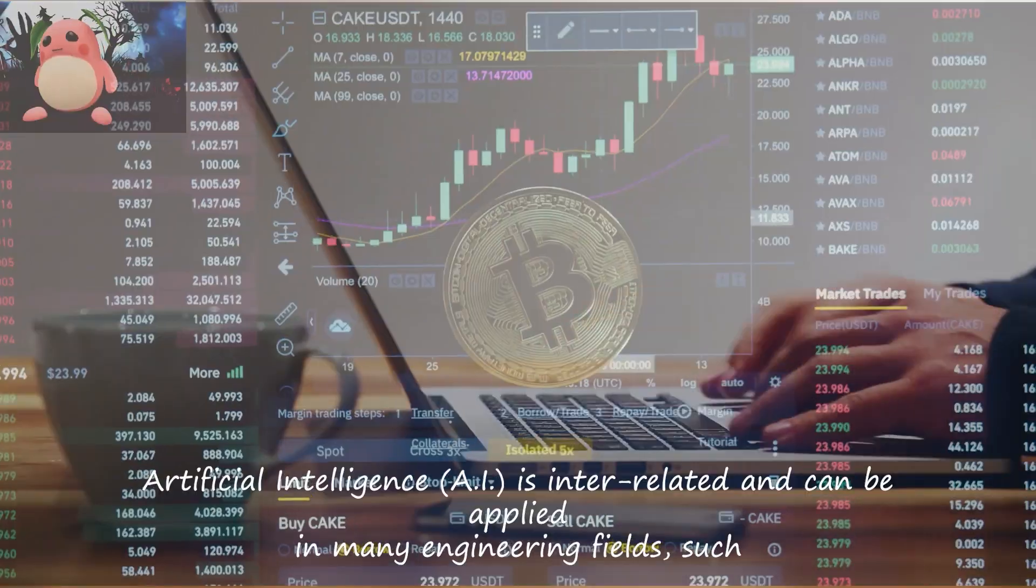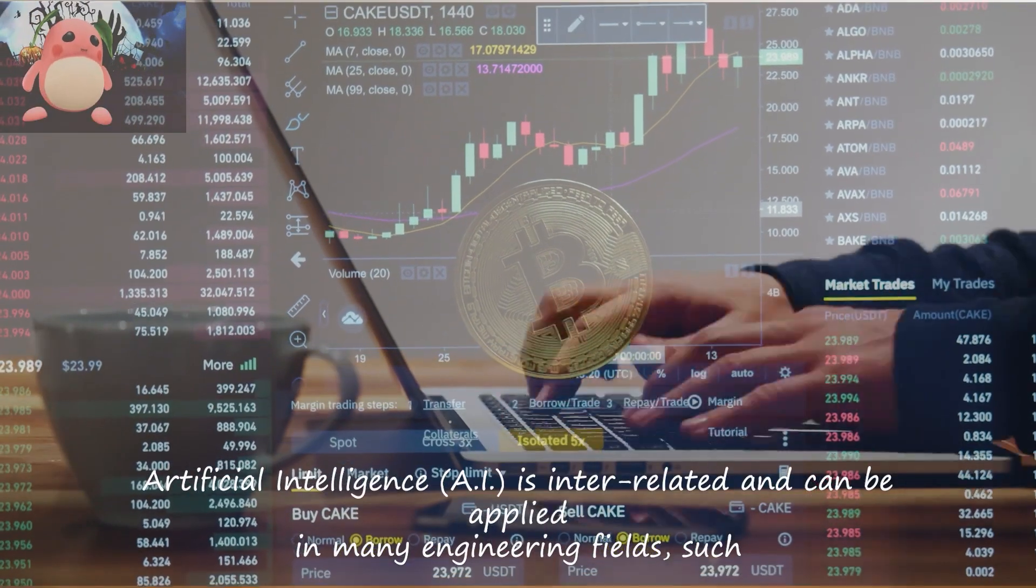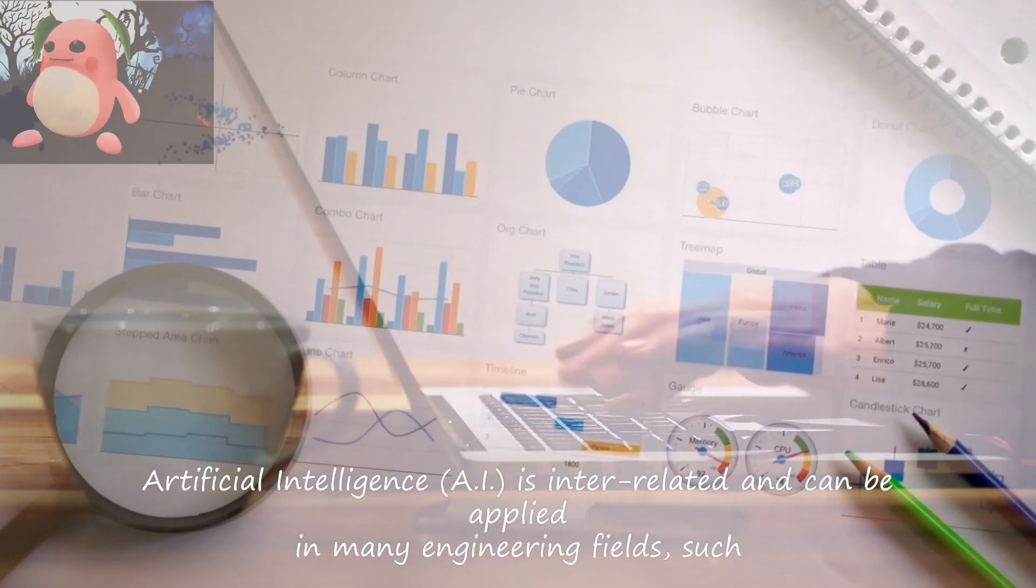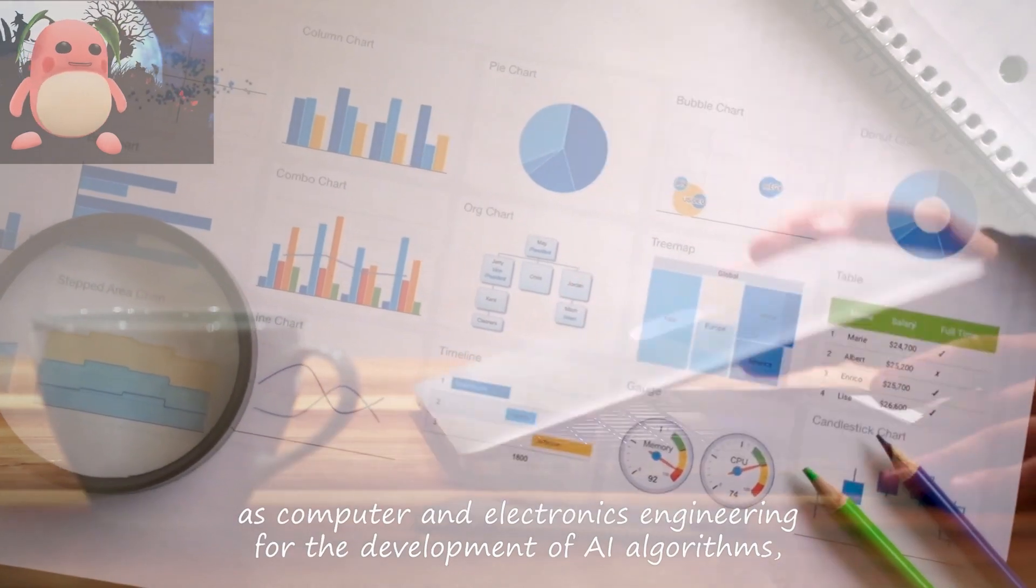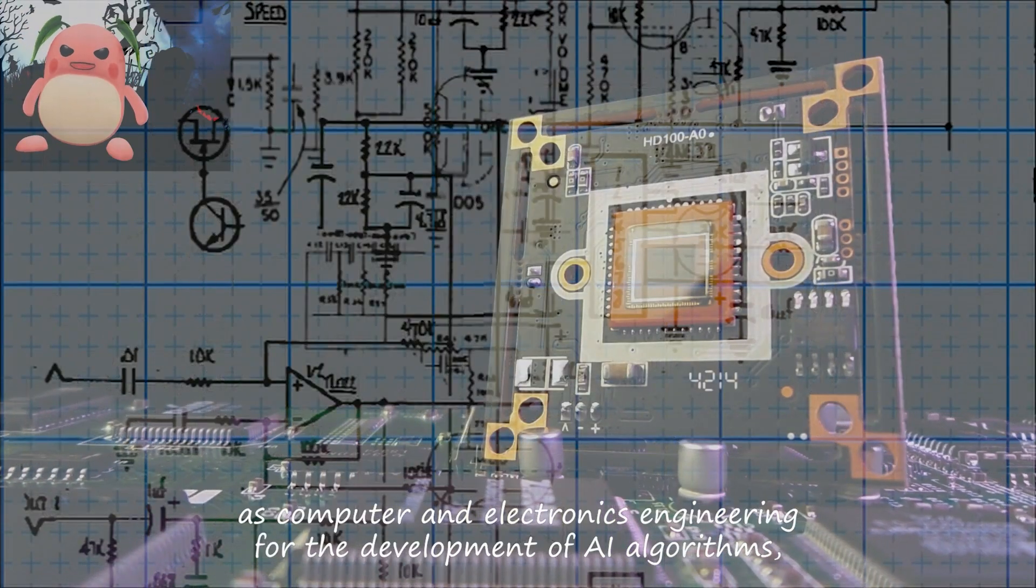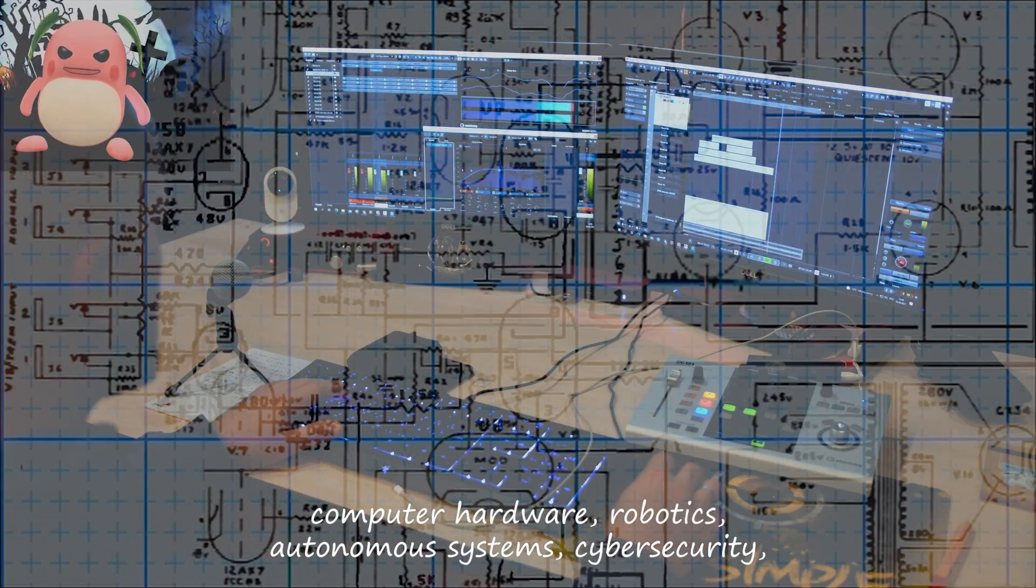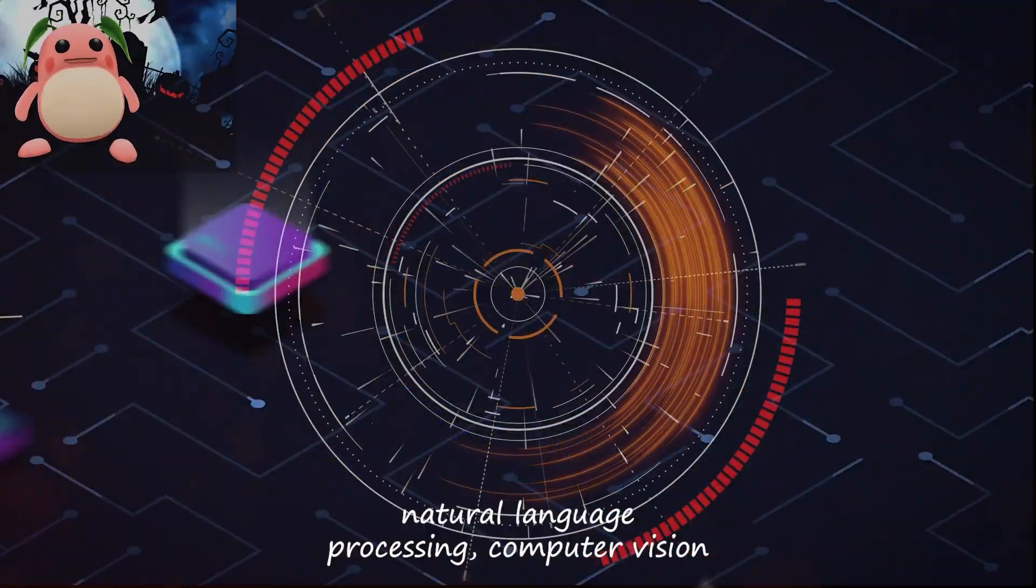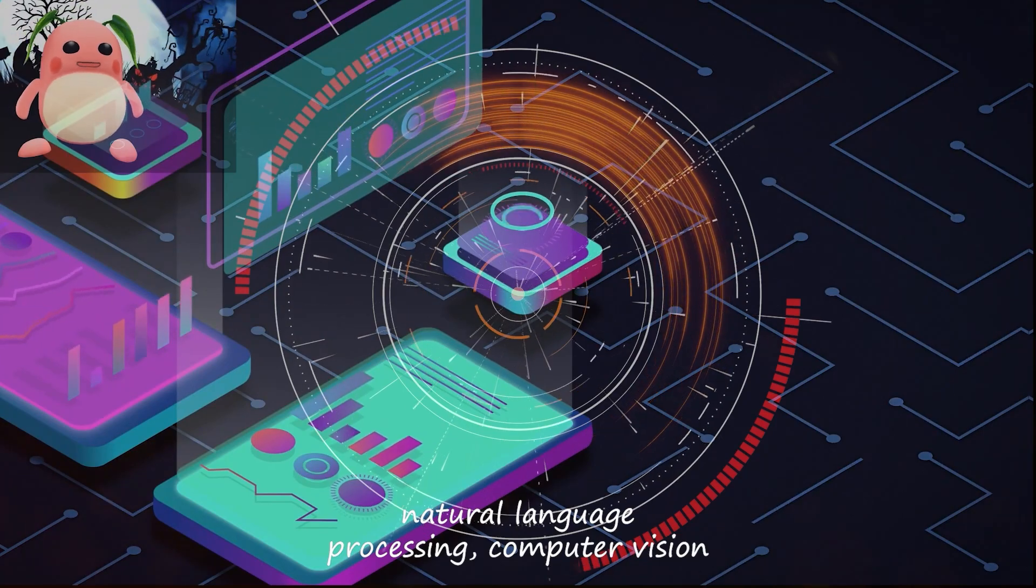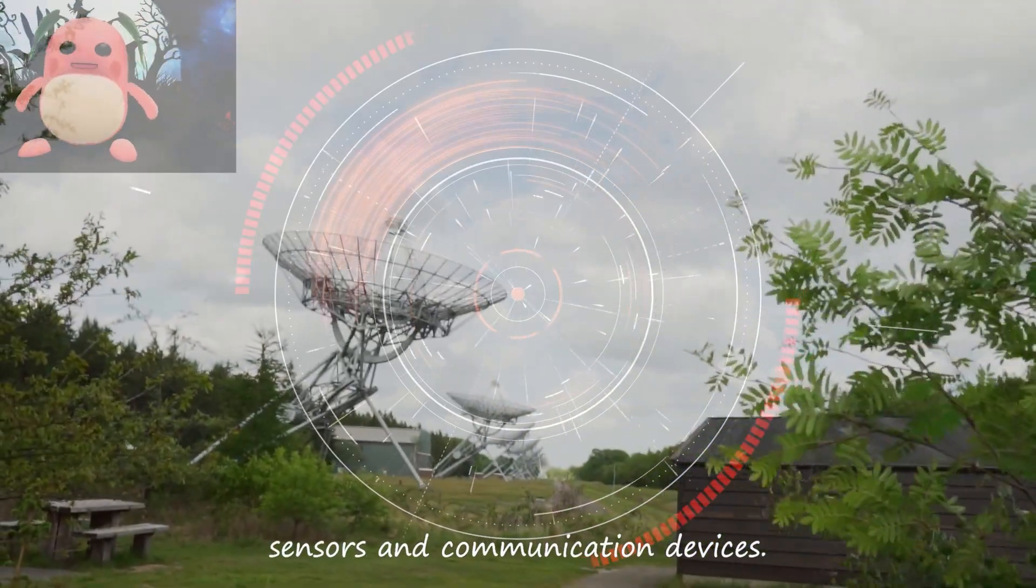Artificial intelligence is interrelated and can be applied in many engineering fields such as computer and electronics engineering for the development of AI algorithms, computer hardware, robotics, autonomous systems, cybersecurity, natural language processing, computer vision, sensors, and communication devices.